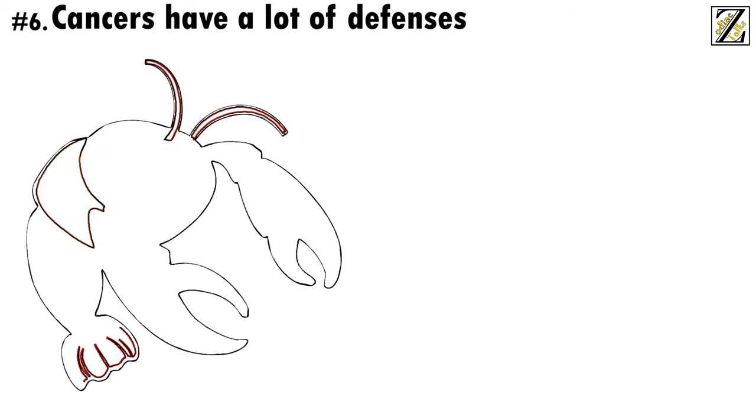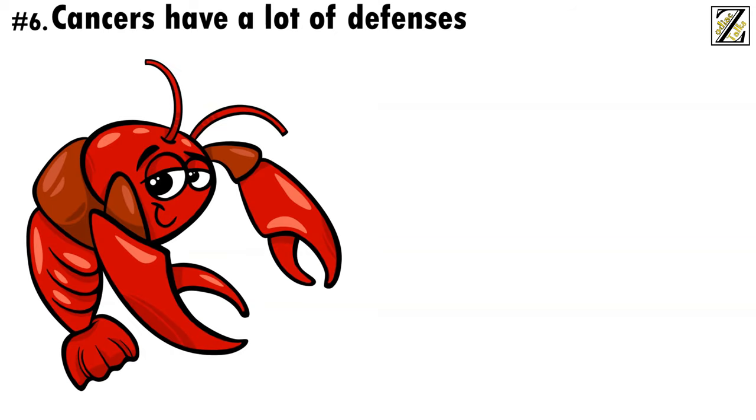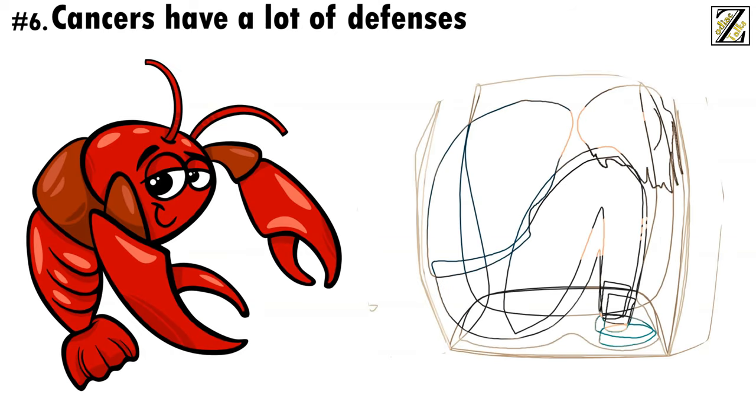Number 6. Cancers have a lot of defenses. Like the crab that symbolizes them, Cancers have a tough exterior that they use to protect their soft and mushy insides. More than anything, Cancer is afraid of being hurt by those they love, which means they build up defenses to protect themselves and hide from others.